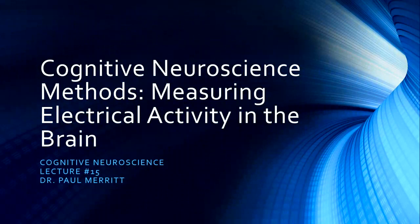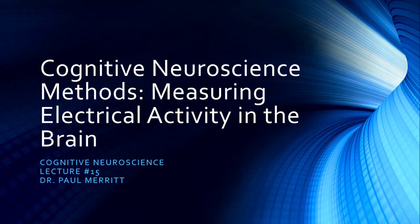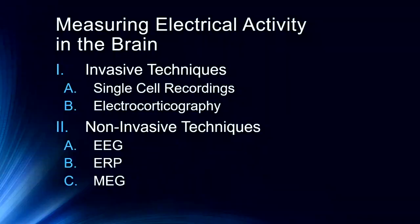Hello and welcome to lecture number 15 for cognitive neuroscience. We're continuing our trek through research methods. We will be discussing electrical activity in the brain and how it's measured in today's lecture. Following this we will get into functional neural imaging, and then we will finally be done with research methods — two more lectures after this: one on functional neural imaging and another on PET scans and functional magnetic resonance imaging. But today we're talking about measuring electrical activity in the brain.